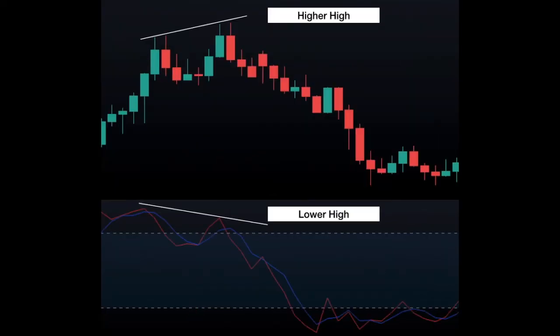A bearish divergence occurs when the price shows a higher high, but the stochastic shows a lower high.